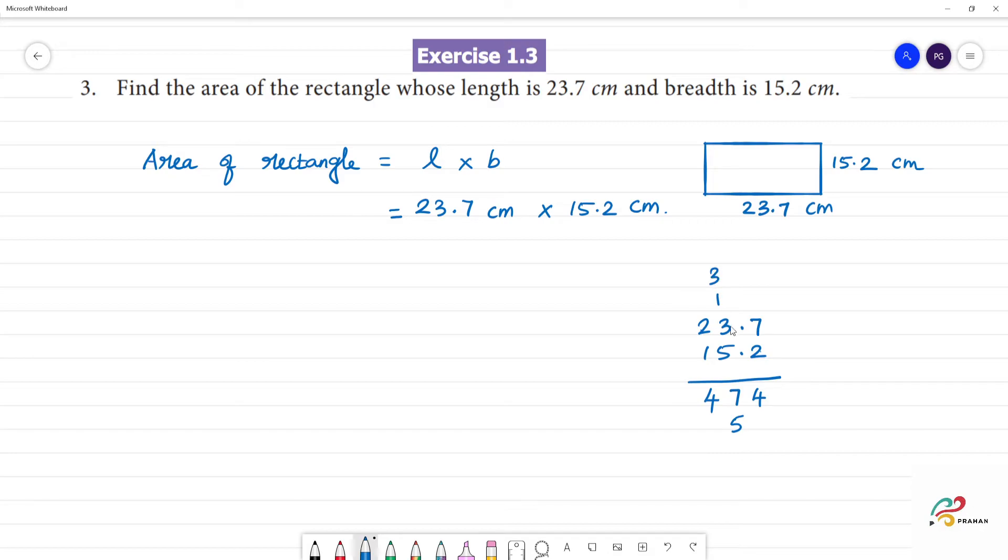7 times 5 is 35, remainder 3. 5 times 3 is 15 plus 3 is 18, remainder 1. 5 times 2 is 10 plus 1 is 11. Next, 1 times 7 is 7, 1 times 3 is 3, 1 times 2 is 2.